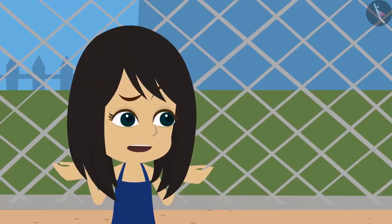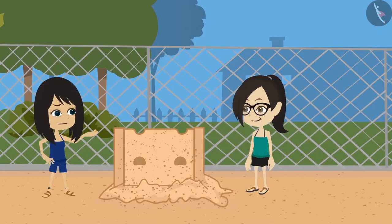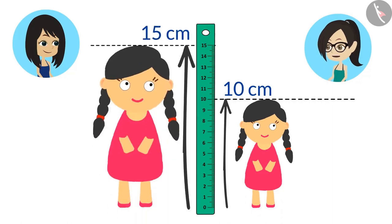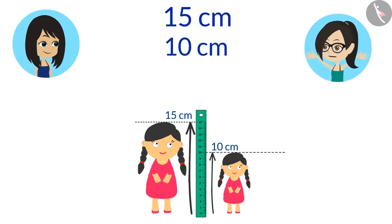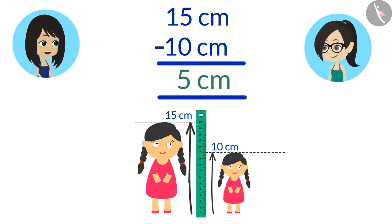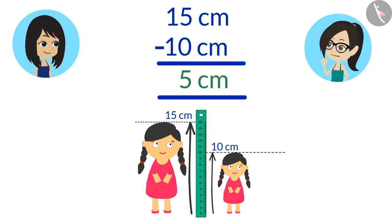'Did you notice one thing? My doll is taller than your doll.' 'Yes, but how much taller is your doll than my doll?' 'That's easy to find. Your doll is 10 centimeters tall and my doll is 15 centimeters tall. If we subtract the height of your doll, which is 10 centimeters, from the height of my doll, which is 15 centimeters, we get 5. That means your doll is 5 centimeters shorter than my doll.'